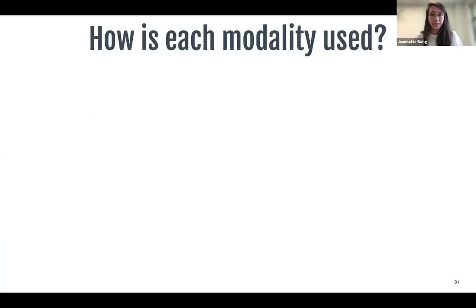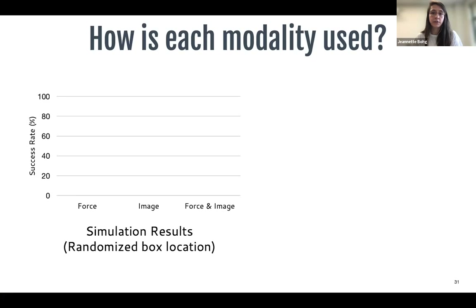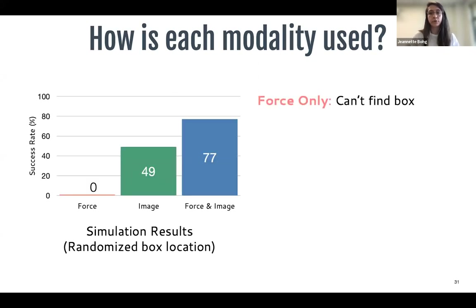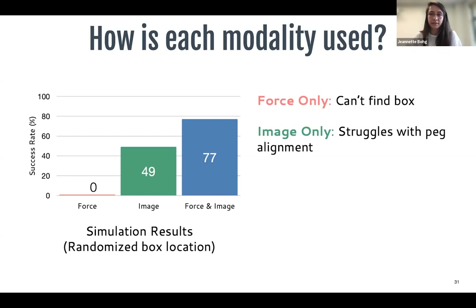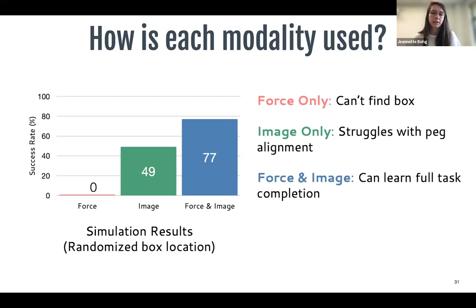When we remove one modality, performance suffers. In simulation experiments with randomized box locations, removing force data makes the policy essentially blind — it can't find the box. With only image data, we get 49% test success, but the policy struggles with precise alignment. With both force and image, success reaches 70–77% in simulation. Our results confirm that the representation uses all modalities for this contact-rich task.